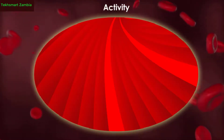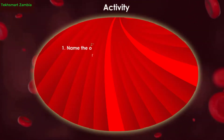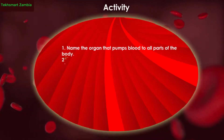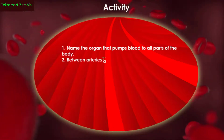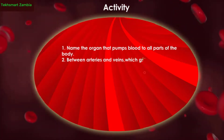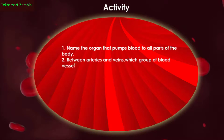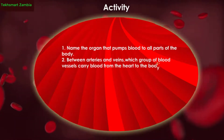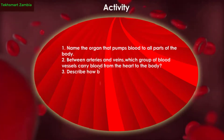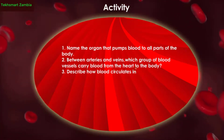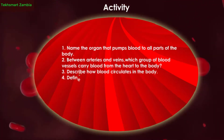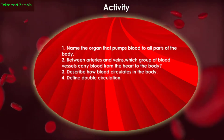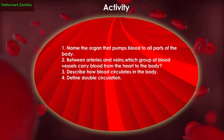Activity: One — name the organ that pumps blood to all parts of the body. Two — between arteries and veins, which group of blood vessels carries blood from the heart to the body? Three — describe how blood circulates in the body. Four — define double circulation.